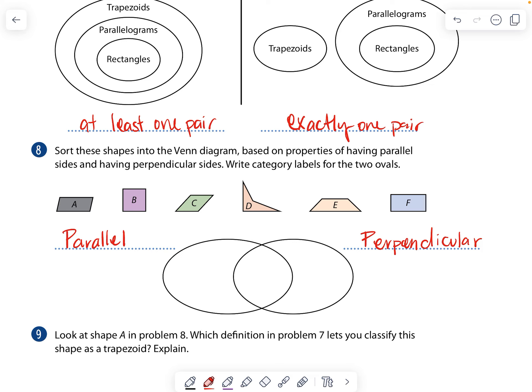So I'm going to look at A. A doesn't have any angles with 90 degrees, so I know it's going to be parallel. B has parallel lines and perpendicular, so that's going to be both. So it's going to be in the middle. We're going to cross these out so we know we've done them. This one again has parallel lines, no 90. This one has perpendicular, no parallel.